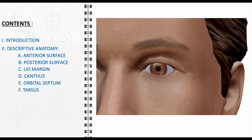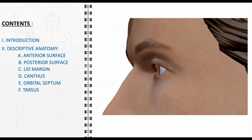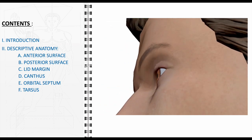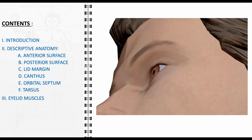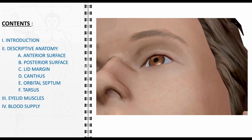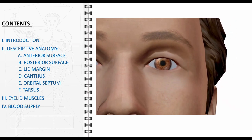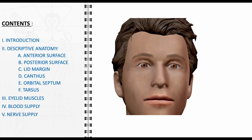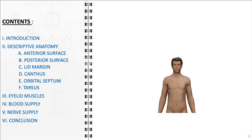We will then examine the canthi, the orbital septum, and the tarsus, explaining their functions and significance. Moving forward, we will explore the anatomy and roles of the eyelid muscles, followed by an in-depth look at their blood and nerve supply. We will also discuss common disorders and their impact, and conclude with key takeaways summarizing the most important aspects and their relevance in clinical practice.